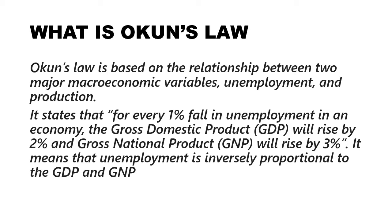Okun's Law is based on two macroeconomic variables: unemployment and production — by production it means GDP. GDP is a measure of the total value of goods and services produced by citizens and non-citizens in a year. The law states that for every one percent fall in unemployment in an economy, GDP will rise by two percent and GNP will rise by three percent. This means unemployment is inversely proportional to GDP and GNP.